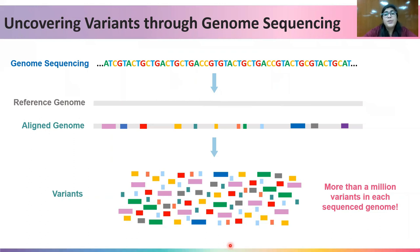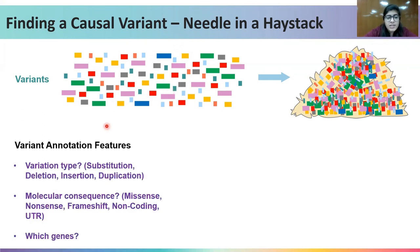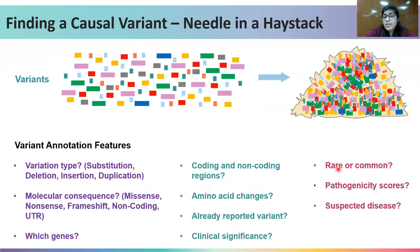The next logical question is how to proceed. Finding a causal variant from a list of a million variants is like finding a needle in a haystack. The obvious logical step is to first annotate the variant features: the type of variation, the molecular consequence, which genes they lie in, whether they are coding or non-coding, what amino acid changes they lead to, if they are already reported variants, their clinical significance, whether they are rare or common, their pathogenicity scores, and whether they are associated with a disease phenotype.